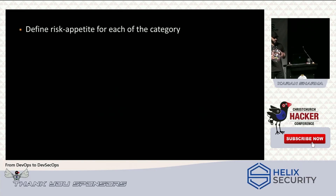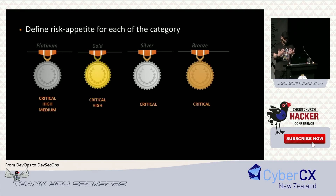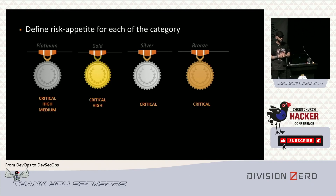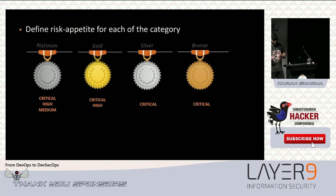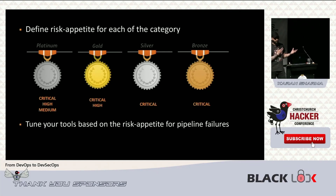Once you've categorized your crown jewels, define a risk appetite for each category. For platinum assets, you probably want to fix critical, high, and medium vulnerabilities before going live. When you tune your security tools to fail pipelines, they use this risk appetite model — you're not just failing pipelines arbitrarily, and if someone complains you can always fall back on this defined model.